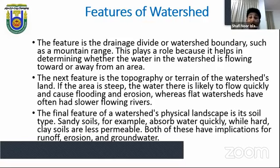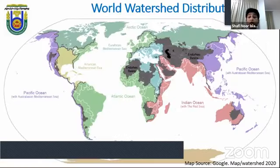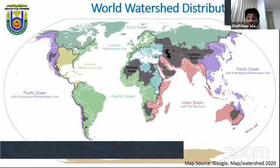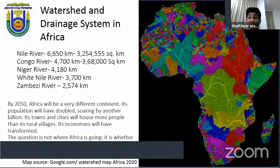Another feature is topography or terrain — if an area is steep, water flows quickly causing flooding and erosion, while flat watersheds have slower flowing rivers. The world watershed distribution shows a nice scenario of river basin and catchment areas of main rivers in different parts of the world. However, climate change, human influence, anthropogenic disturbance and development activities are damaging watersheds everywhere — in Brunei, Bangladesh, Africa and other parts of the world.